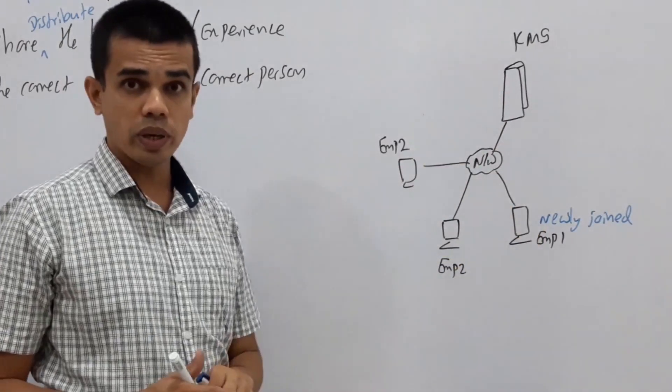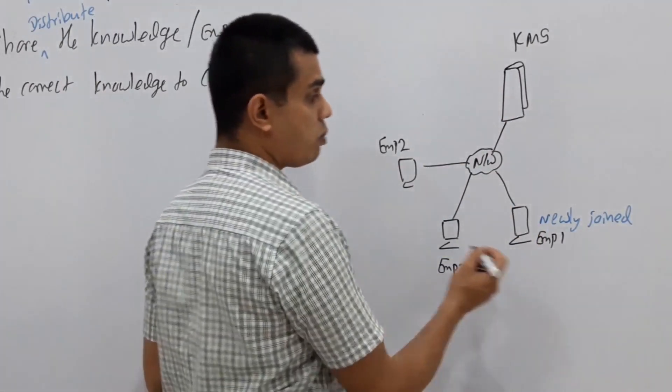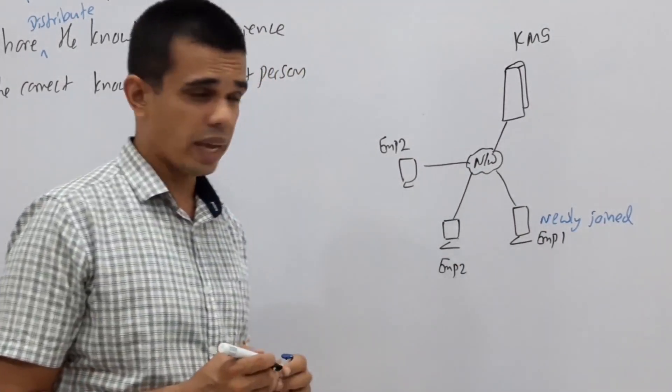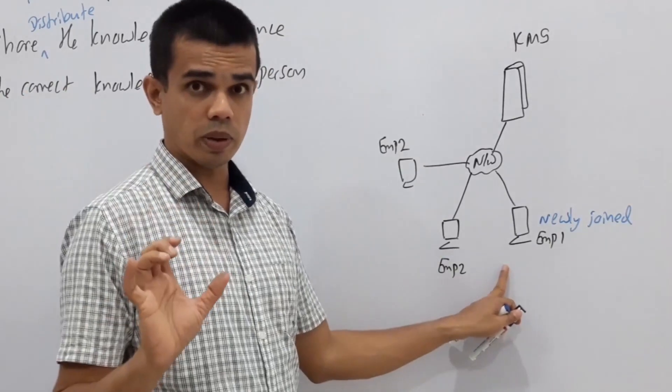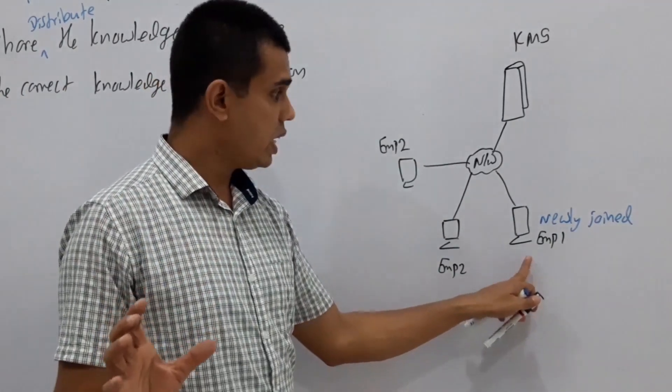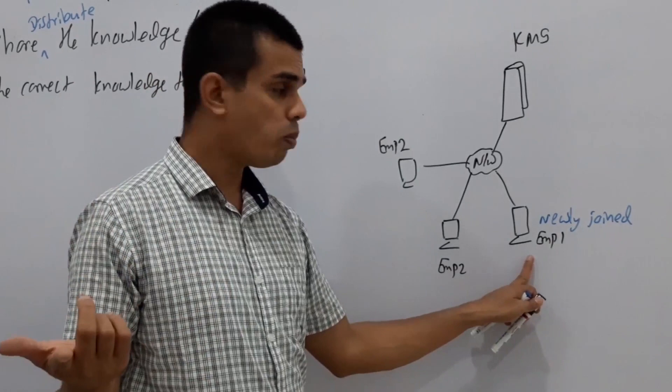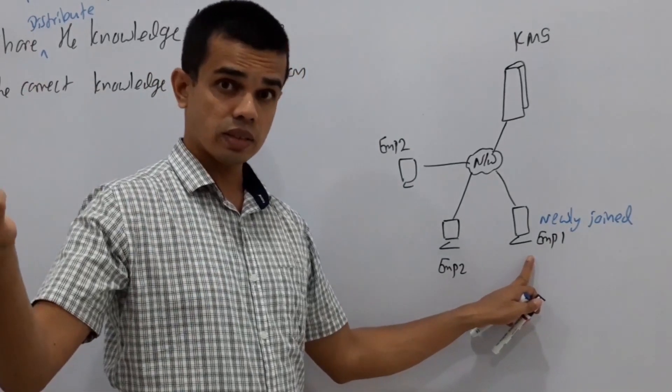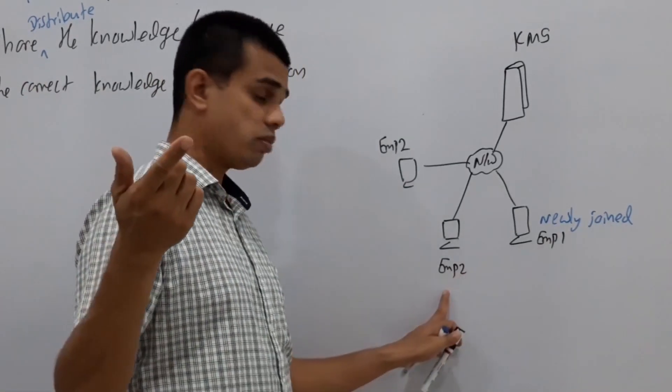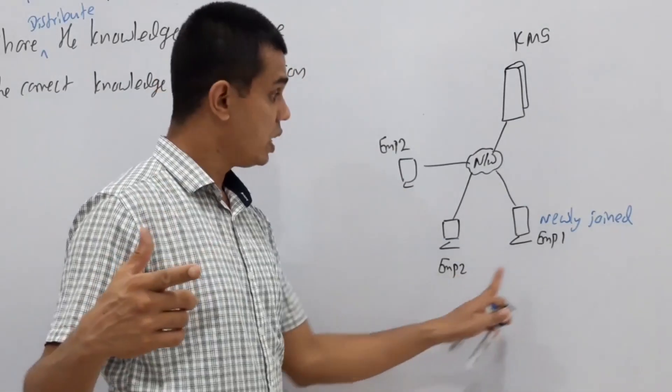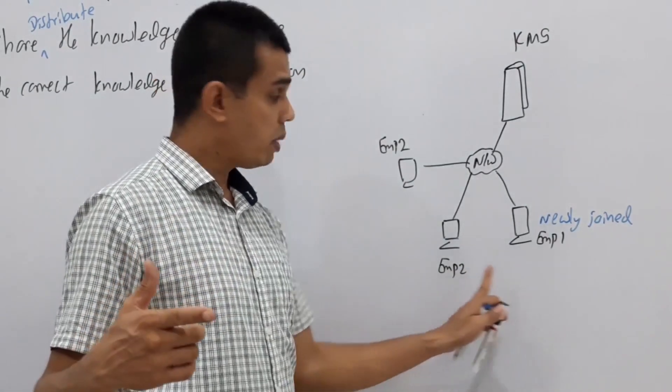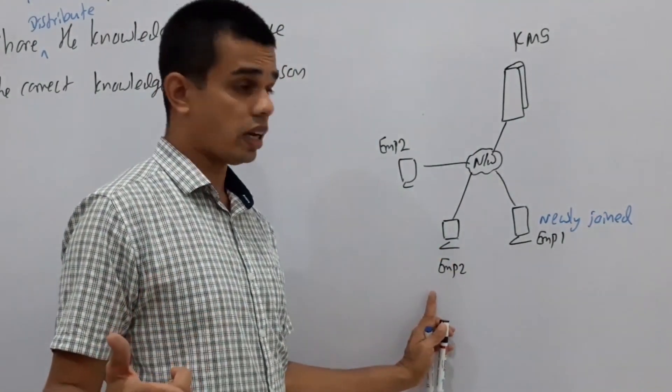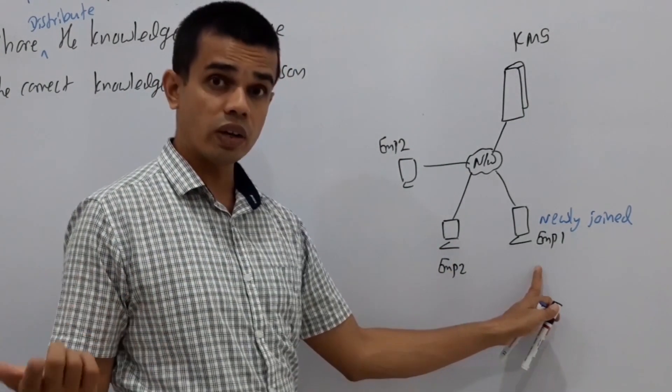As an example, there is a company where they use a KMS. Normally that KMS is running in a certain server. All the knowledge of their employees are saved into the KMS. There is a newly joined employee who is meeting with a certain problem. As an example, in the bank, the employee meets with a certain problem. To overcome that, he needs to ask that problem from one of his seniors.